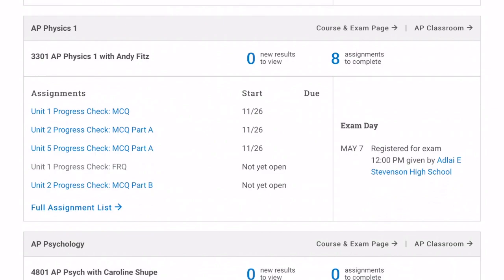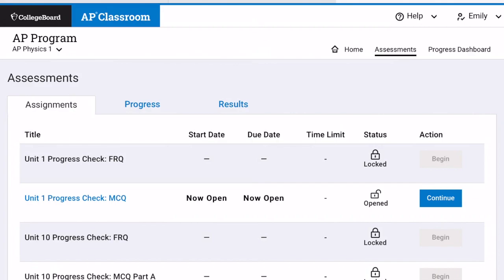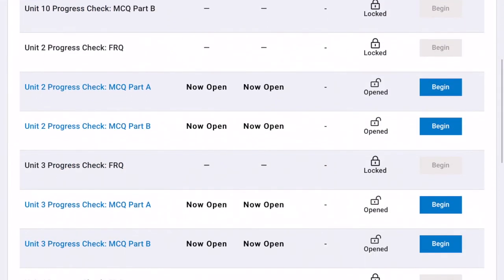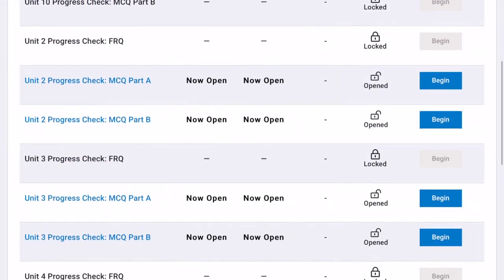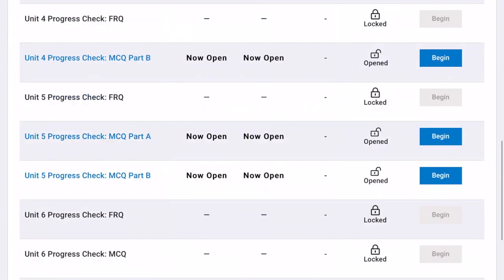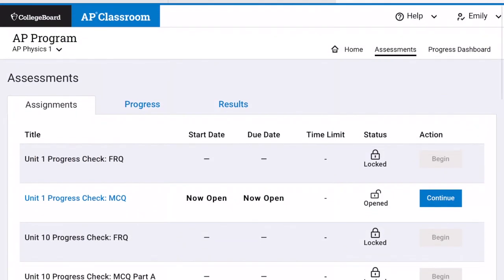I'm going to look for a unit 4 progress check, so I'm going to click the full assignment list. And then you can see all of the ones here. We just unlocked the multiple choice right now, so you can begin any of those other ones. But to see your results, you're going to click on results.